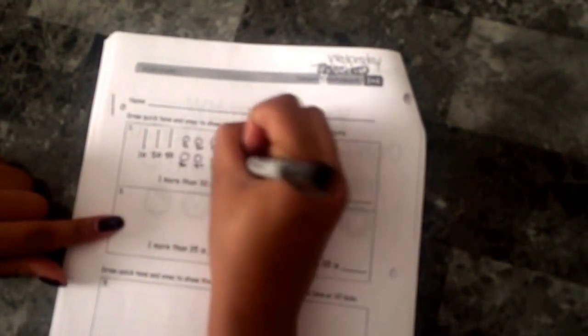One more than 38 is blank, so we need to draw one more. They need to draw one more one, so plus one more and that's going to make it 39. So one more than 38 is 39.